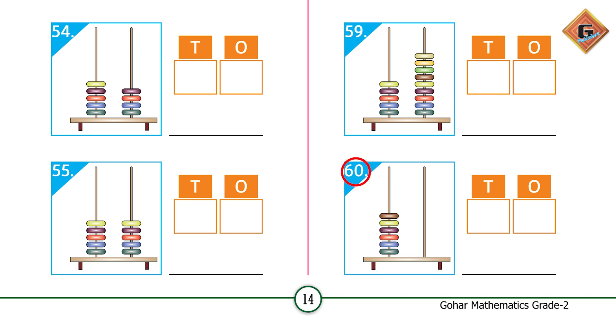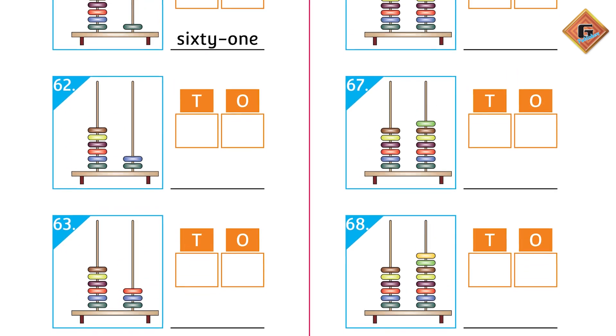At 60 we are making a change. The ones rod is empty, it means nothing, zero. And on the tens rod there are six beads. So we write zero under ones and six under tens, and the number name is 60.